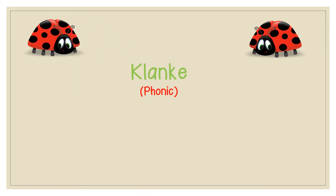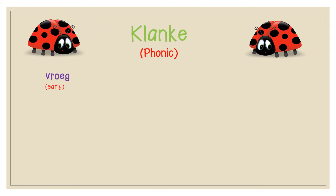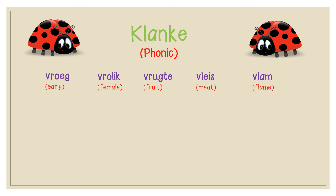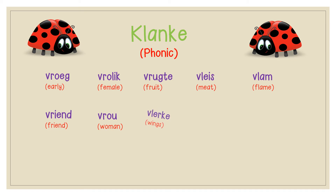Right, learners. So let's go through our Klanka, which is Phonics. Vroeg — Early. Vrolik — Female/Happy. Vrugte — Fruit. Vlees — Meat. Vlam — Flame. Vriend — Friend. Vrou — Woman.